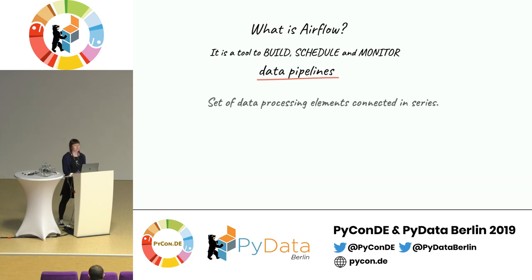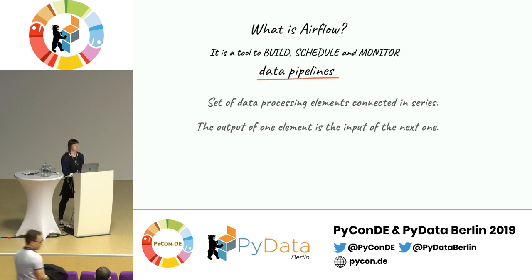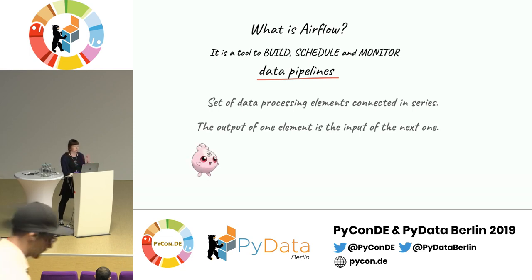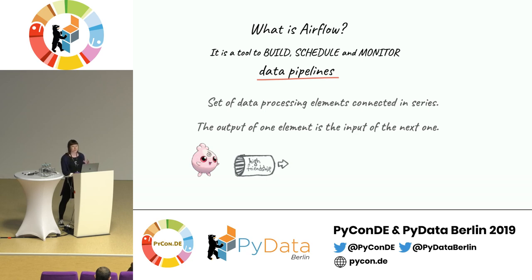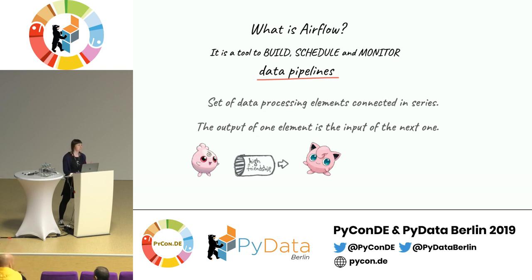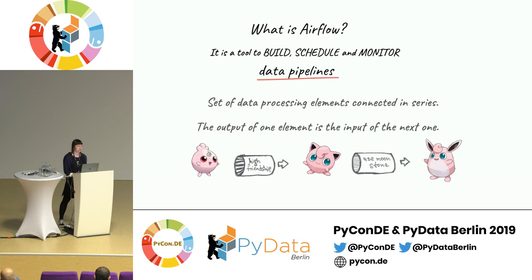Let's also define what a data pipeline is. A data pipeline is a set of data processing elements connected in series, where the output of one element is the input to the next one. Imagine you have some data, you put it into a data processing element — simply put, a function — and you get a transformed output that you can put into the next function, and so on.